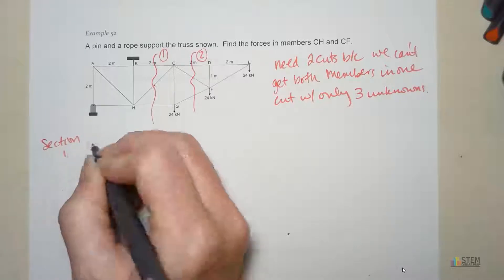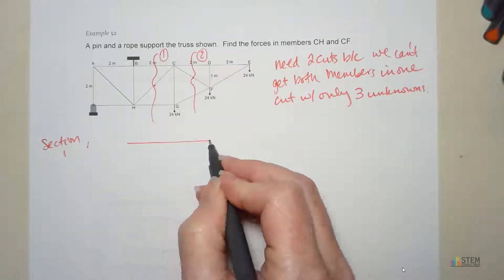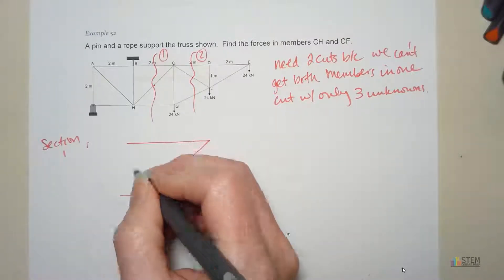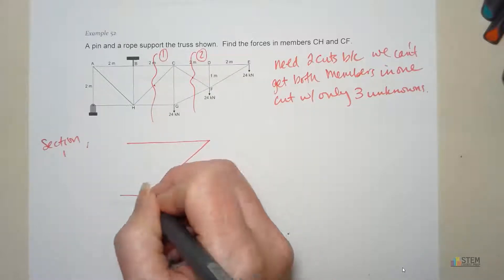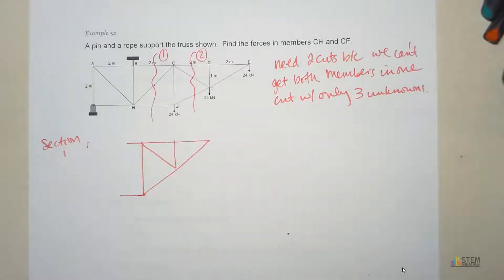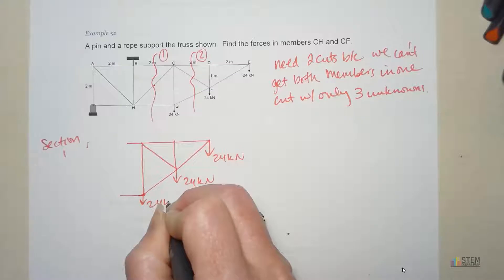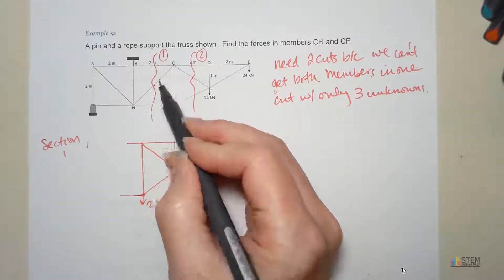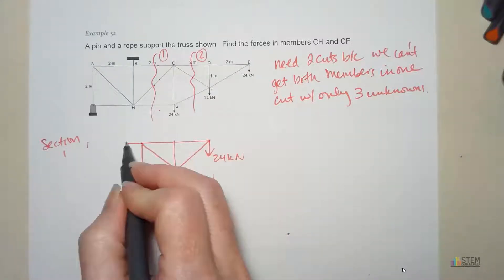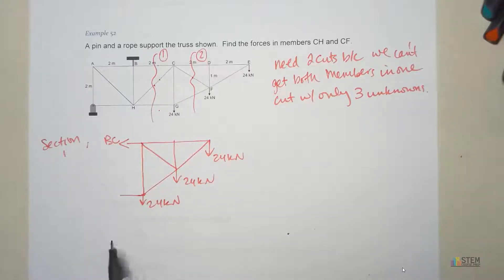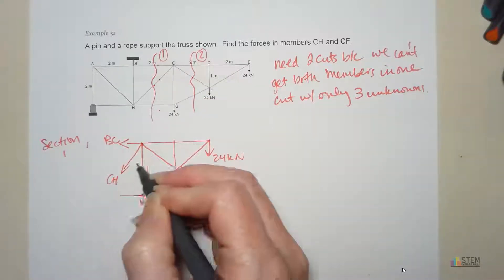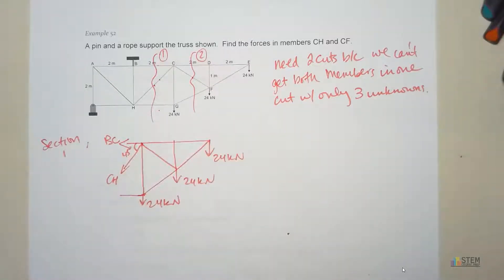So let's call this section one. And let's draw it out. So it looks something like this. Then let's put our three applied forces here. They're all 24 kilonewtons. Then we've got the three members that we cut through. So there are forces there. We're going to have one for BC. Remember, always draw it going out of the section. We've got this one right here, the CH. That was the one we wanted to find. And this angle right here, 45 degrees. And then finally, we've got GH for that one. Notice three unknowns, which is what we want.